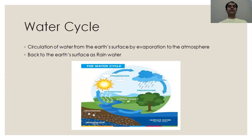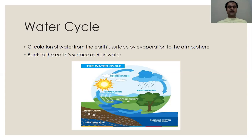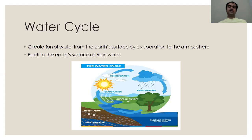Water cycle. We have been learning the water cycle since around standard four or five. The water cycle is the natural recycling of water — circulation of water from the earth's surface by evaporation to the atmosphere, evaporation taking place due to the sun's heat, and then back to the earth's surface as rainwater. It is a circulation — evaporation, then condensation, then precipitation. The same water comes down as rainwater and is evaporated again. So you can say the water cycle is nothing but natural distillation — the same water is purified, distilled, and recycled.